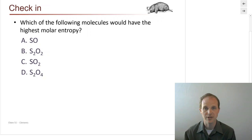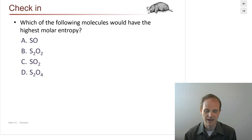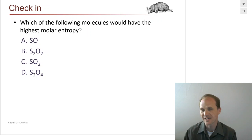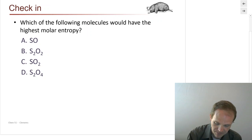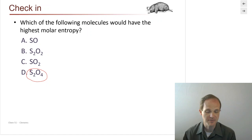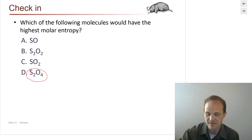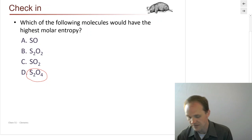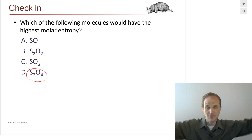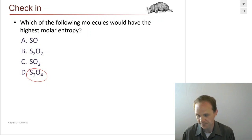Which of the following molecules would have the highest molar entropy? Molar entropy just means units are joules per mole Kelvin. When comparing molecules, molecular complexity is one of the biggest contributors. S2O4 has six atoms versus the others with two, three, or four atoms. The thing with six atoms has the highest molar entropy — S2O4 wins because it has far more ways to vibrate, more bonds that can do wiggles, waggles, and torsions, and therefore can distribute energy in more ways.